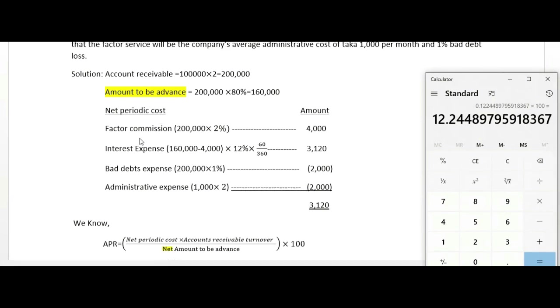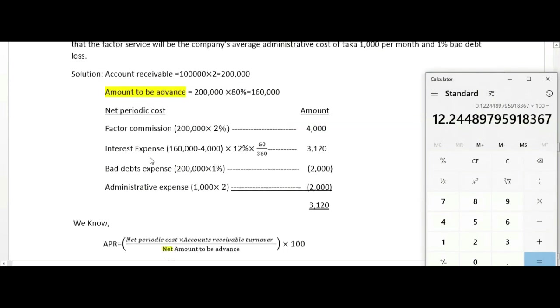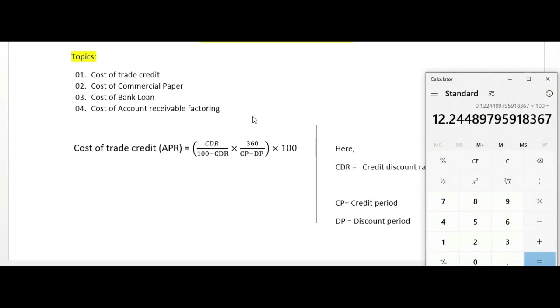Factor commission and interest expense are the main charges. Bad debt expense and administrative expense are additional considerations. In the next class, we will work through more questions on this topic. That concludes today's class.